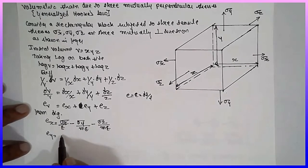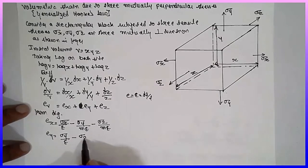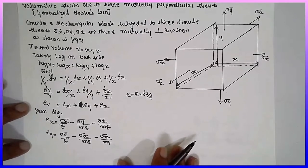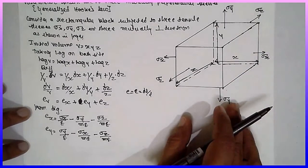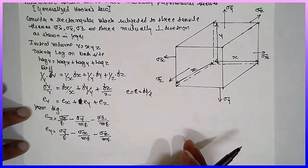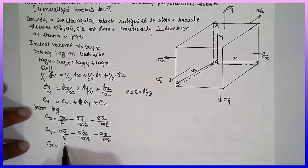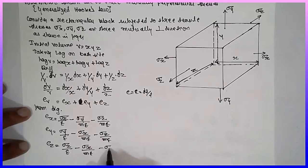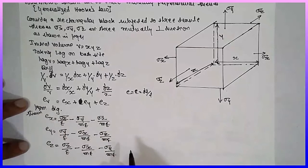If forces act in the y-direction, strain eY equals sigma y divided by E, minus sigma x divided by ME, minus sigma z divided by ME. Because forces are acting mutually perpendicular to each other. Similarly, strain eZ equals sigma z divided by E, minus sigma x divided by ME, minus sigma y divided by ME.